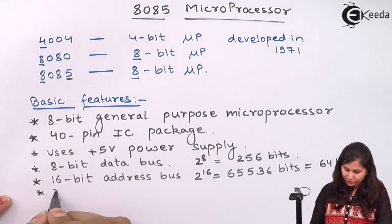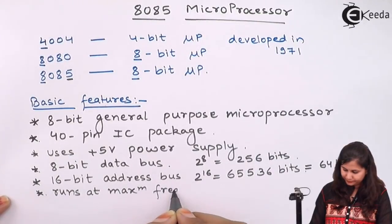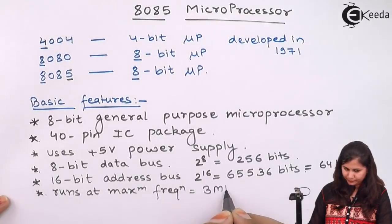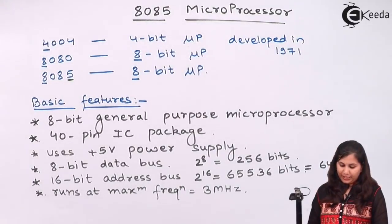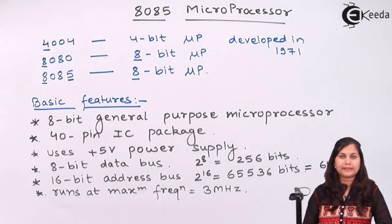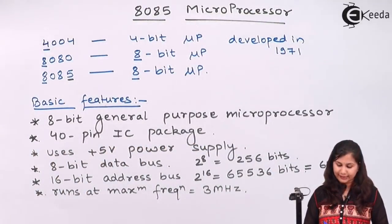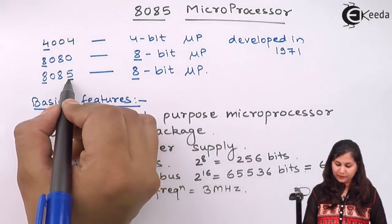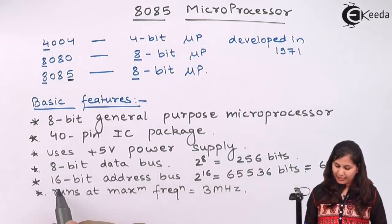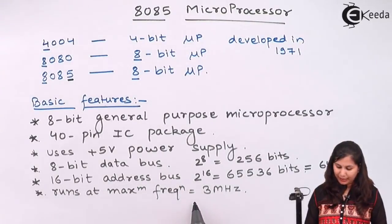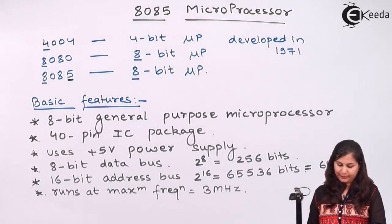It runs at a maximum frequency of 3 megahertz. So these are the basic features of the 8085 microprocessor: it is an 8-bit general purpose microprocessor, it comes as a 40-pin IC package with 40 pins, it uses plus 5 volts power supply, it has an 8-bit data bus and a 16-bit address bus, and it runs at a maximum frequency of 3 megahertz.